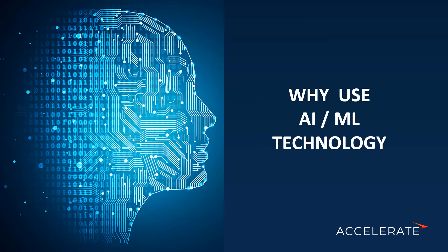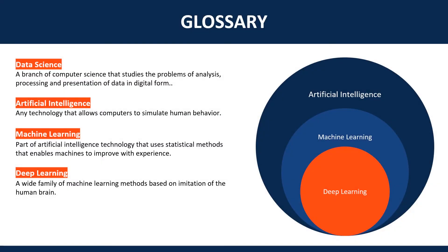Before we get going, let's settle down on some definitions. There's a lot of hype around AI, and if you're not actively following the industry, you might be getting a little confused between all these terms. So let's start by discussing what data science is. Data science is the art of analyzing a lot of information, a lot of data, and it usually concentrates on searching for patterns and turning data into information.